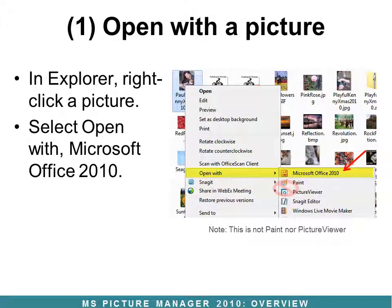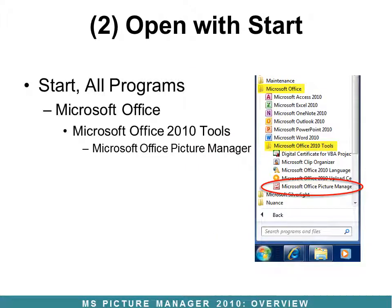There are a couple of ways to open Picture Manager. The easiest is to open a picture, right-click on it, and select Open With. It's called Microsoft Office 2010. Note that this is not Paint nor Picture Viewer, so don't click those. It doesn't mention Picture Manager on it, but that's exactly what it is. Another option is to click on the Start menu, then go to All Programs, Microsoft Office, and drill your way down to Microsoft Office Picture Manager.